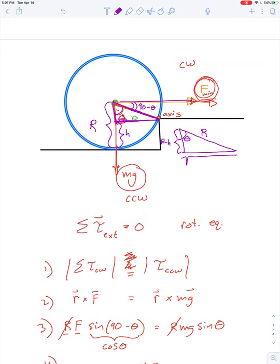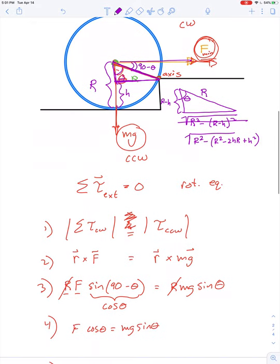the missing side would have to be R squared minus the quantity R minus H squared. That's the same thing as the square root of R squared minus R squared minus 2HR plus H squared. That's the same thing as the square root of H times the quantity 2R minus H.